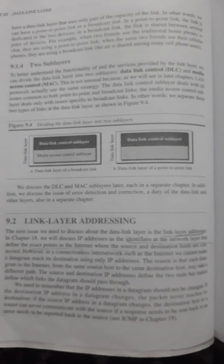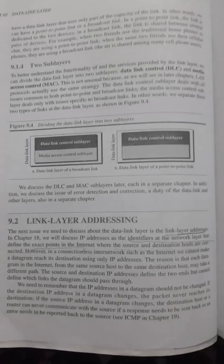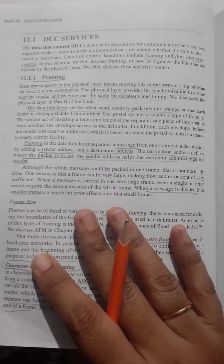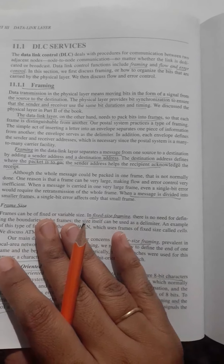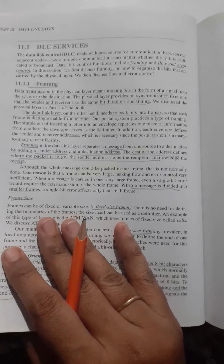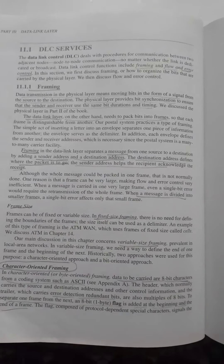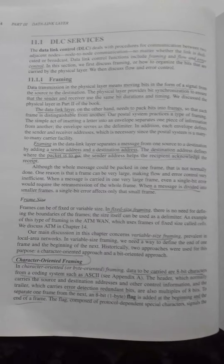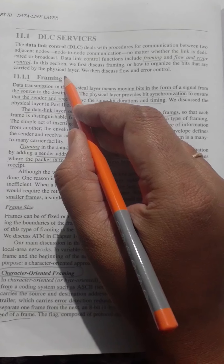The data link layer is divided into two sub layers. Let us see what are the functions of this DLC data link control sub layer. The responsibilities of data link control are framing, flow control, and error control. Let us see what we mean by framing and the related concepts.